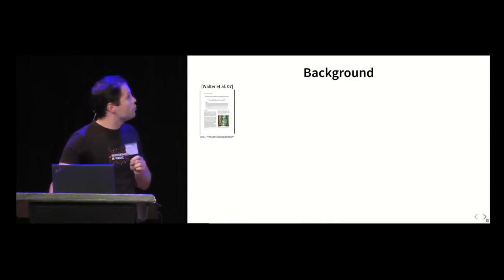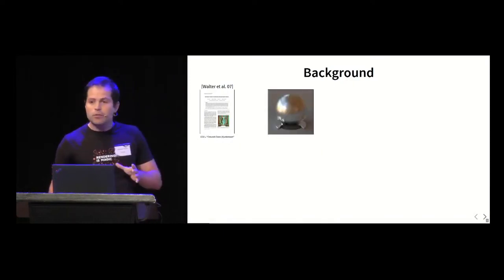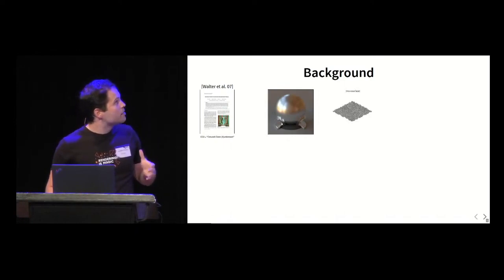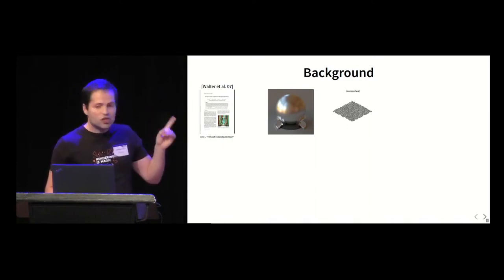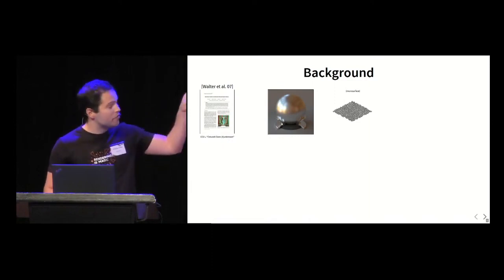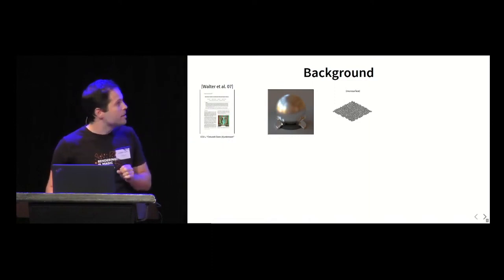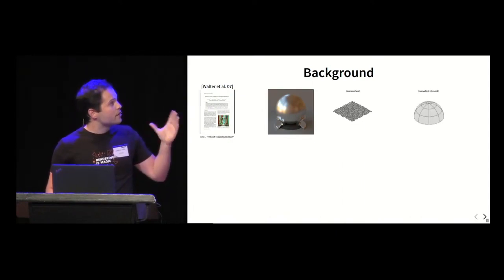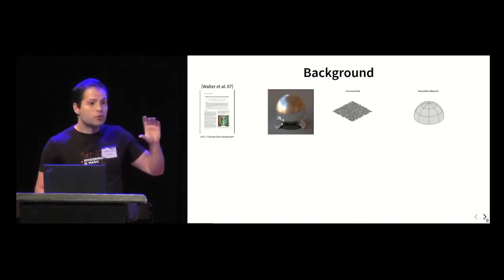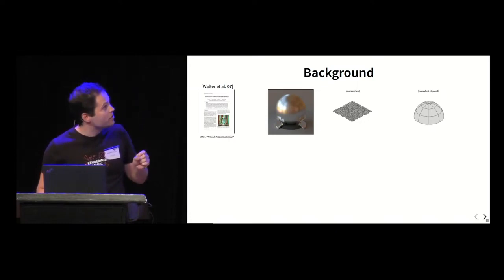Microfacet theory was introduced by Bruce Walter and colleagues in 2007. It's a physical framework to explain the appearance of surfaces by basically explaining that the appearance is the result of interactions between a micro-surface and your incident rays. GGX is a distribution to describe the distribution of orientations of the facets that compose the surface. Another way to see it is that this distribution encodes the distribution of normals that lie at the surface of an ellipsoid.